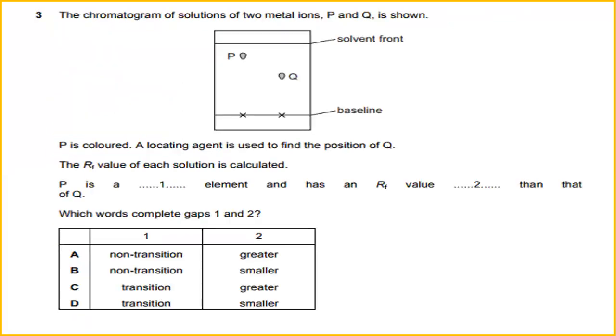Number three. The chromatogram of solutions of two metal ions P and Q is shown. P is colored. A locating agent is used to find the position of Q. The Rf value of each solution is completed. P is a transition element and has an Rf value greater than Q. Which would complete gap one and two? The answer would be C.